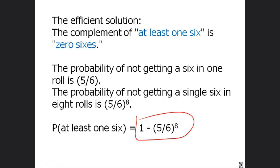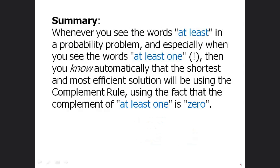In summary, whenever you see the words 'at least' in a probability problem — and especially 'at least one' — you know automatically that the shortest and most efficient solution is the complement rule, using the fact that the complement of 'at least one' is zero. In future videos we'll discuss the complement rule in more complicated scenarios, but for this particular case there should be no problem recognizing it. You'll see these words and that will be the trigger — you know you can use the complement rule as a shortcut.